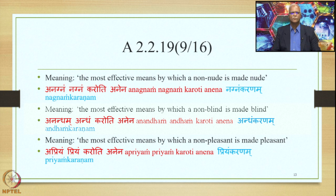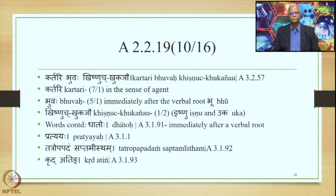This is how the suffix Khyon is added to the verbal root Kuru with these Upapadas, generating Upapada Tatpurusha Samasas. Now let us go to the next Sutra: Kartari Bhavaha Kheshnuch Khokayao, 3.2.57. There are three Padas in the Sutra: Kartari 7.1, Bhuvaha 5.1, and the suffixes Kheshnuch and Khokayao.